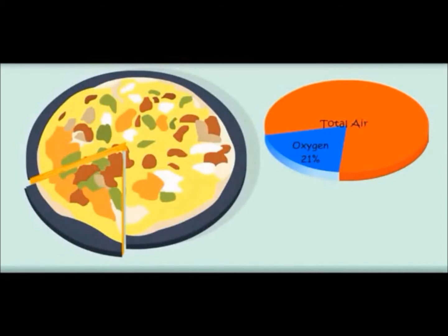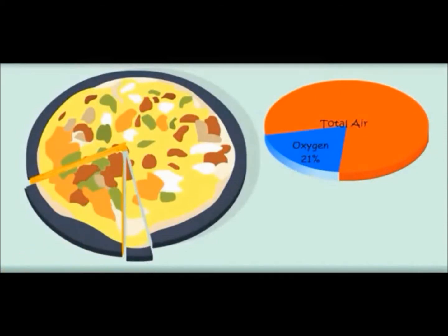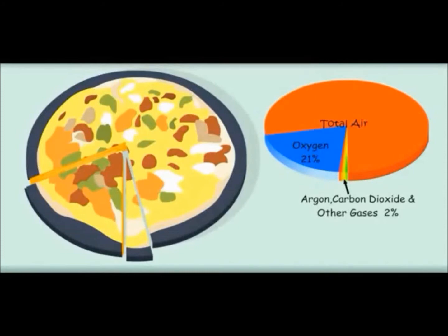Now let me cut one more part. It is very tiny. Which gas is this? These are many gases like argon and carbon dioxide. So much pizza is left — which air is it? It is nitrogen. 77% of air in the atmosphere is nitrogen.